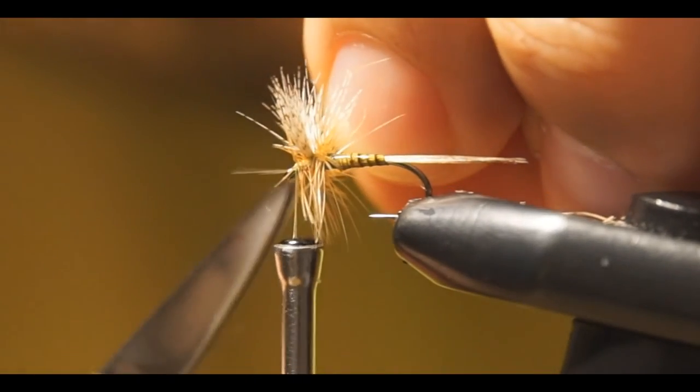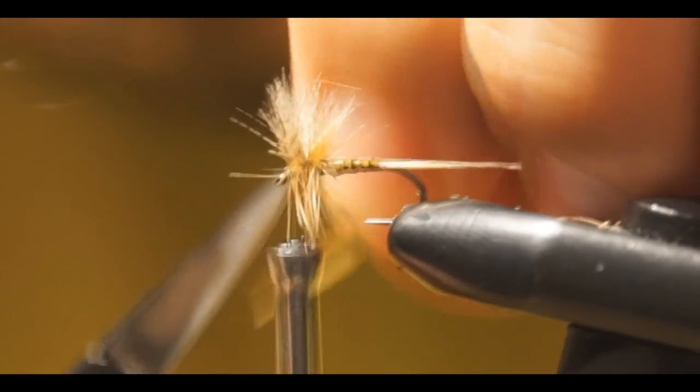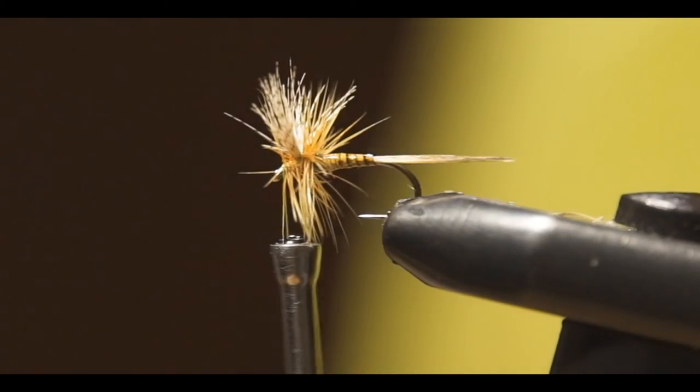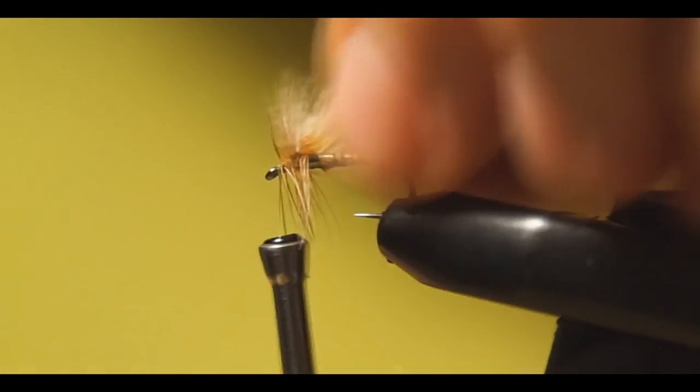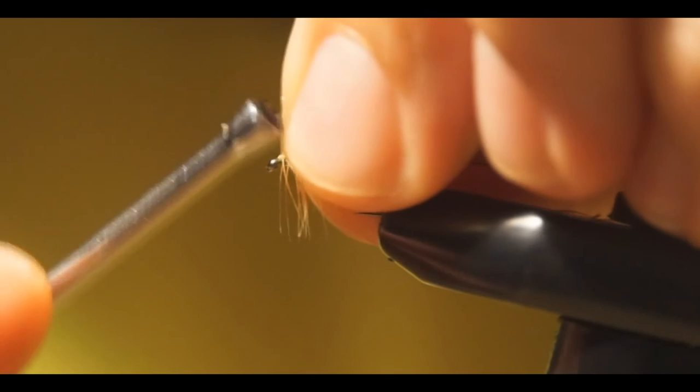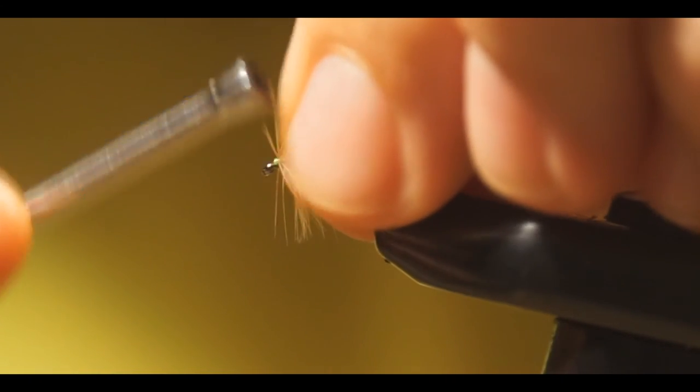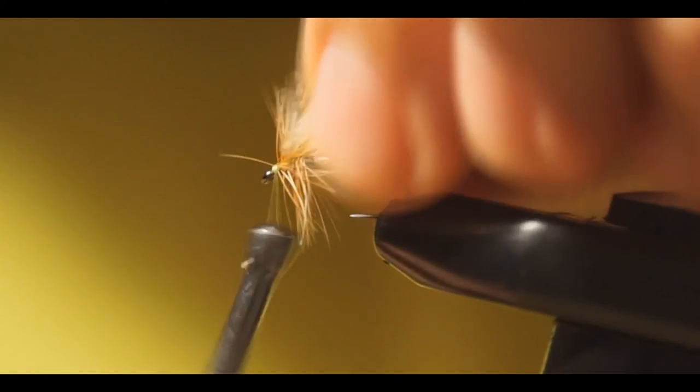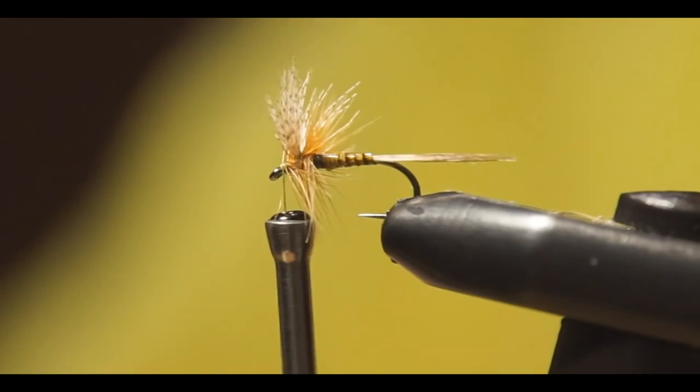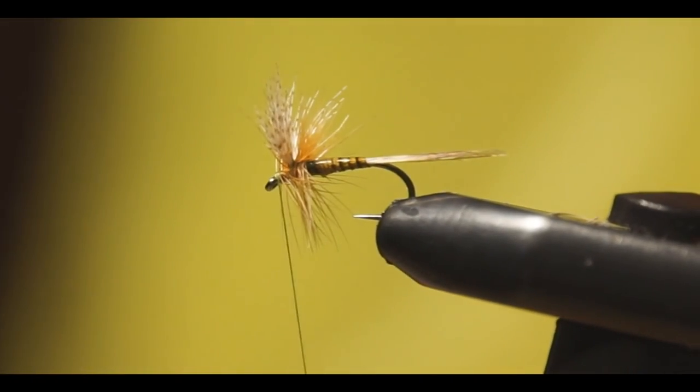Cut the ends. Pull it a little bit back, make another wrap around it. Then we'll make a whip finish knot.